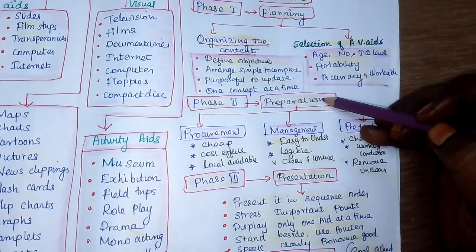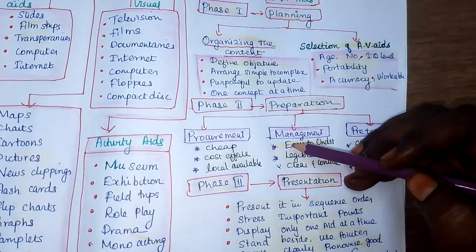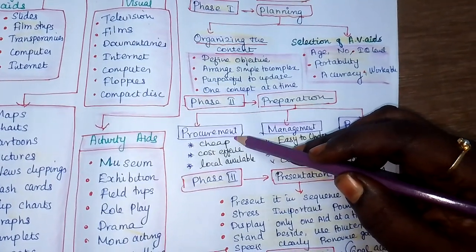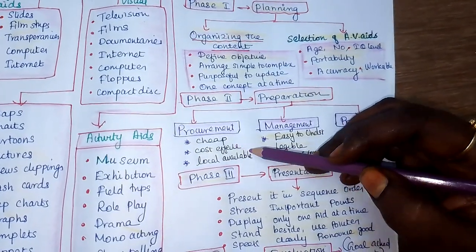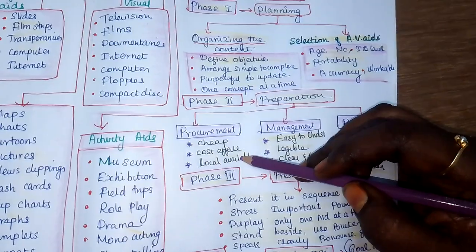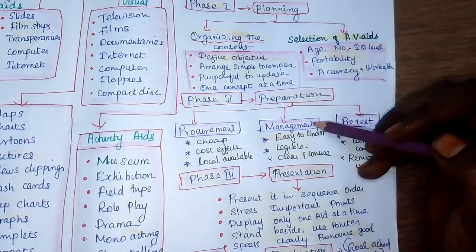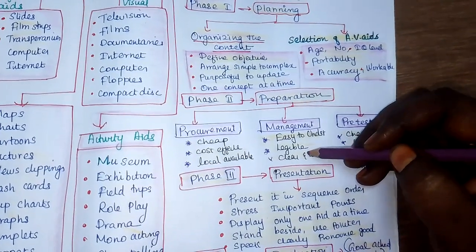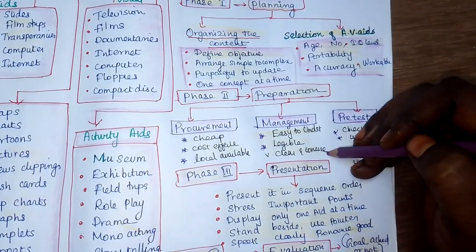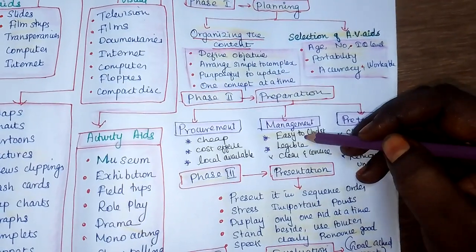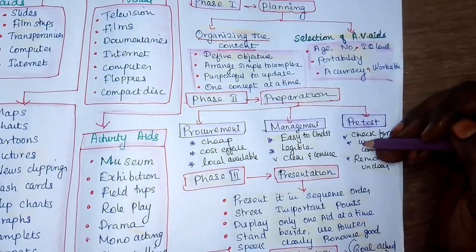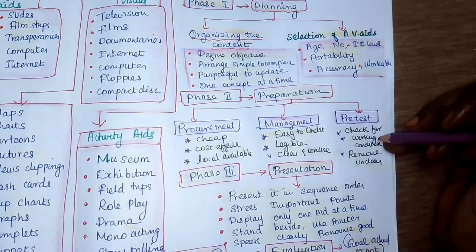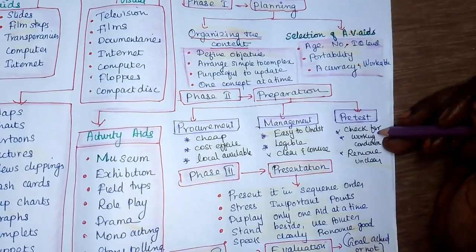The second phase is the Preparation Phase. Consider the age of the children and the objectives. For procurement: select materials that are cheap and cost-effective — color papers available locally. For management: the AV aid should be easy to understand, with legible and concise handwriting. For pre-testing: hold up the chart and check it. Verify readability and remove any ambiguity. If it is not clear, it is better not to show it.